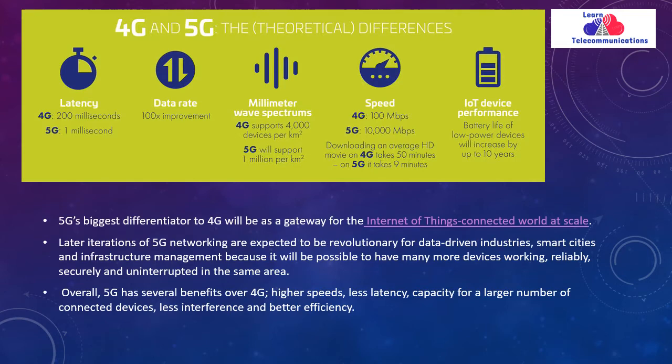Now let's talk about the theoretical differences between 4G and 5G. Latency is a network delay — in the case of 4G we have 200 milliseconds, whereas 5G has 1 millisecond. When it comes to data rate, 5G brings 100 times the improvement over a 4G network.